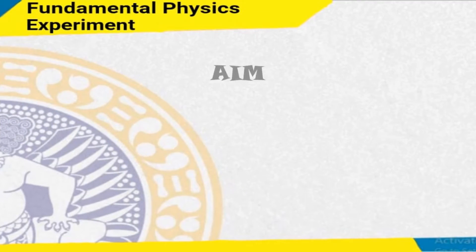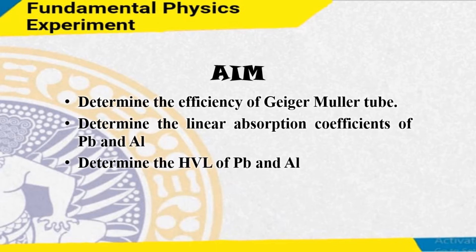The aims of this experiment are: first, to determine the efficiency of the Geiger-Muller tube; second, to determine the linear absorption coefficient of plumbum and aluminum; and third, to determine the HVL of plumbum and aluminum.